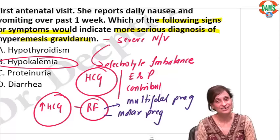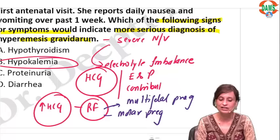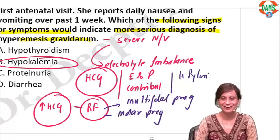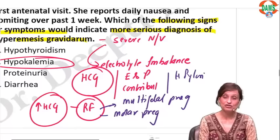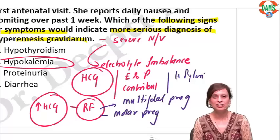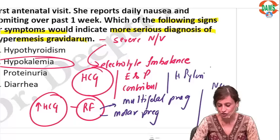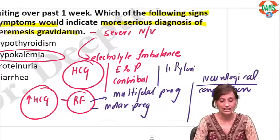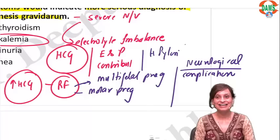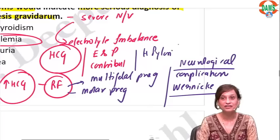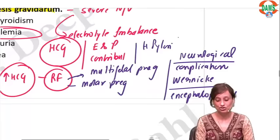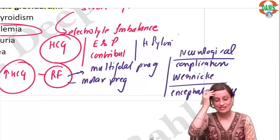Which infection is linked to hyperemesis? H. pylori. Which vitamin deficiency can these patients develop? They can develop Wernicke's encephalopathy — that is the neurological complication. What neurological complication can be seen? Wernicke's encephalopathy. They can also develop vitamin K deficiency and may even present with coagulation defects.